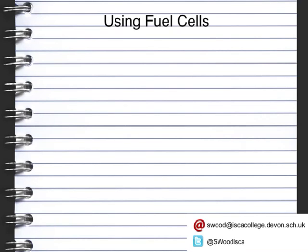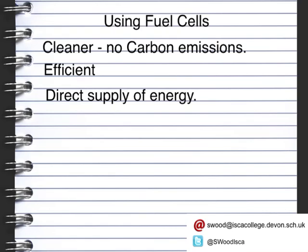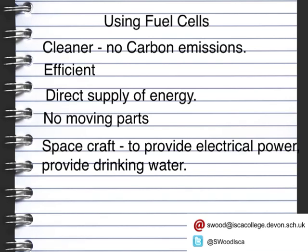So why do we actually use fuel cells? As we've already discussed, it's cleaner and there are no carbon emissions — because it's producing water, you get no carbon dioxide or even any carbon particulates. They're also very efficient and able to supply energy directly to where it's used. There are also no moving parts. Currently, hydrogen fuel cells are used on spacecraft, and some of the advantages include a direct electrical power supply for the spacecraft. Because water is also produced, the people on board are able to get a supply of drinking water.